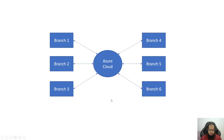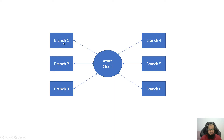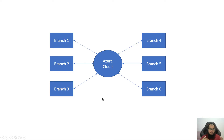If we replicate the green local system for each branch, what happens? If branch one pulls and pushes data at, say, 7pm, and then branch two pulls at 7pm, branch two can get branch one's data because it's already in the Azure Cloud. Then branch two pushes its data to Azure Cloud, and whenever other branches pull, each of them gets the latest data from the Azure Cloud. This is what I mean by push and pull.